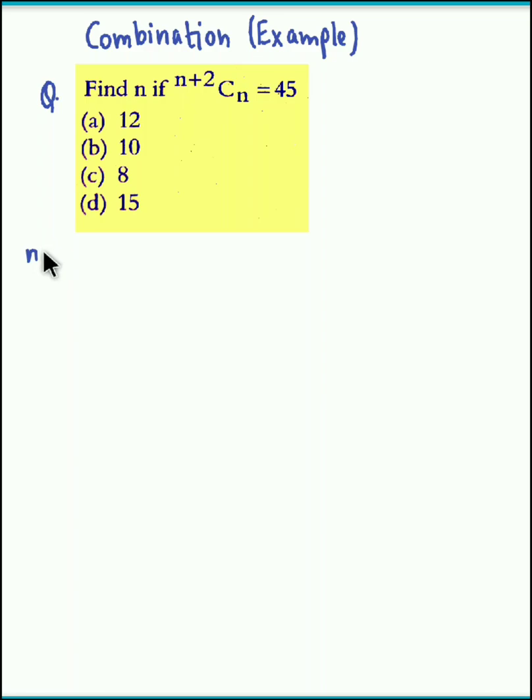So let us consider the given equation n plus 2 Cn equal to 45. Now on the left hand side we use the formula nCr is equal to n factorial upon r factorial into n minus r factorial.